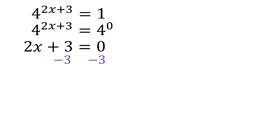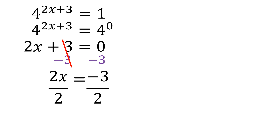Now since it's the same base, we can equate the exponents: 2x plus 3 equals 0. Let's solve for x. We subtract 3 on both sides so the term with x stays on the left, giving us 2x, while on the right 0 minus 3 is negative 3. Then we divide both sides by 2, so x is equal to negative 3 divided by 2, which is negative 1.5.